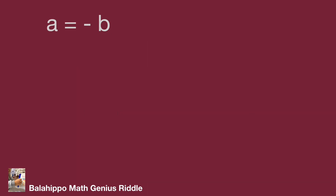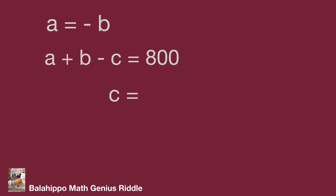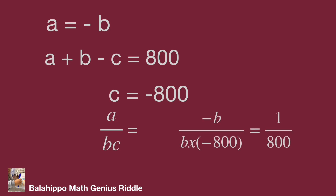While a equals minus b, substituting into a plus b minus c equal to 800 gives c equal to minus 800. Substituting a by minus b and c by minus 800 into a over bc, the value of a over bc is 1 over 800.